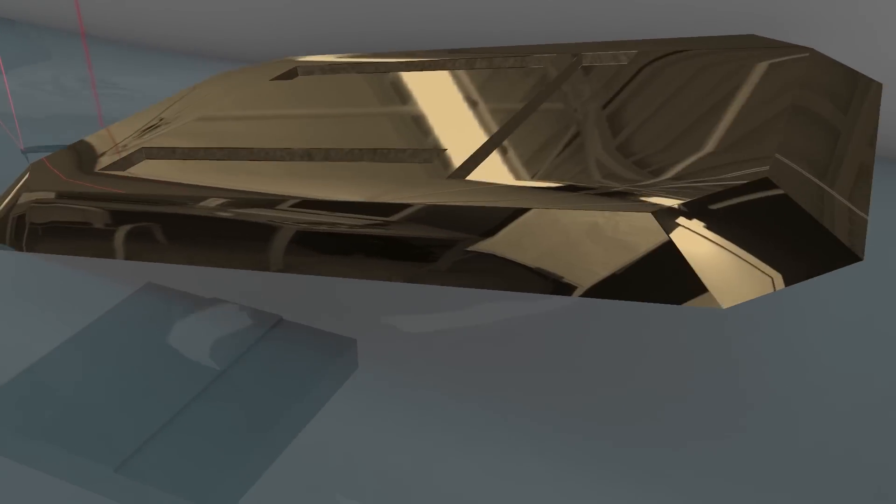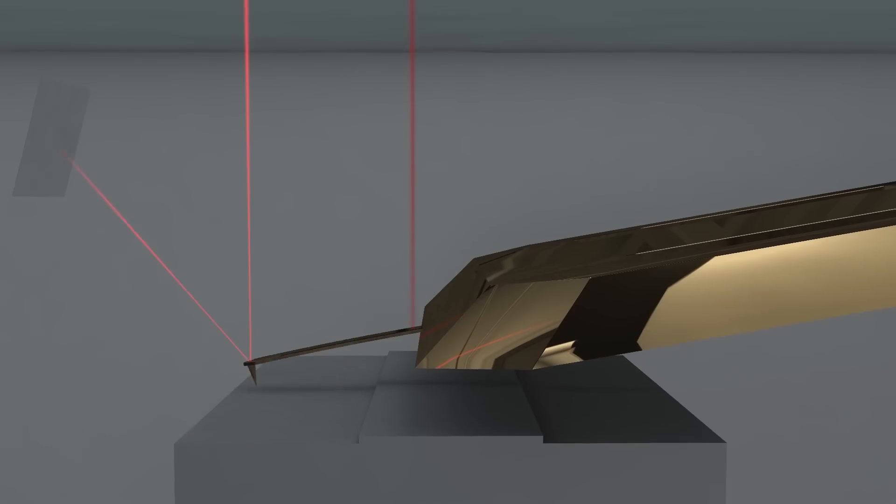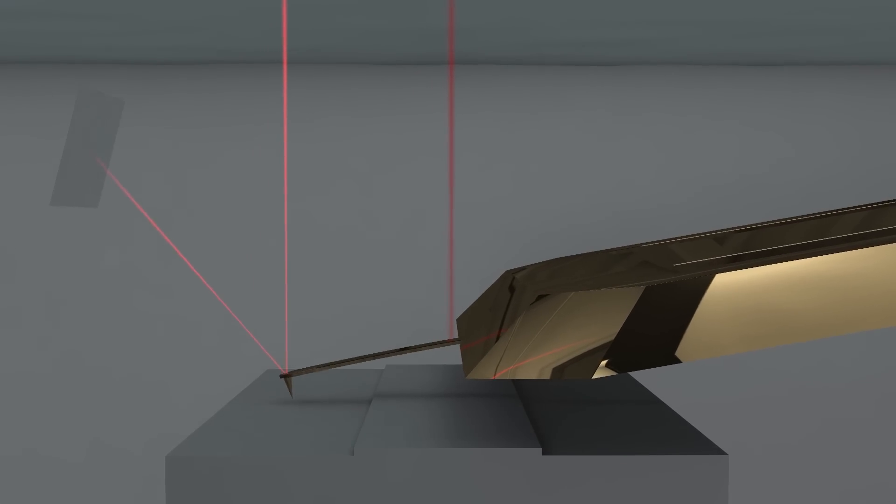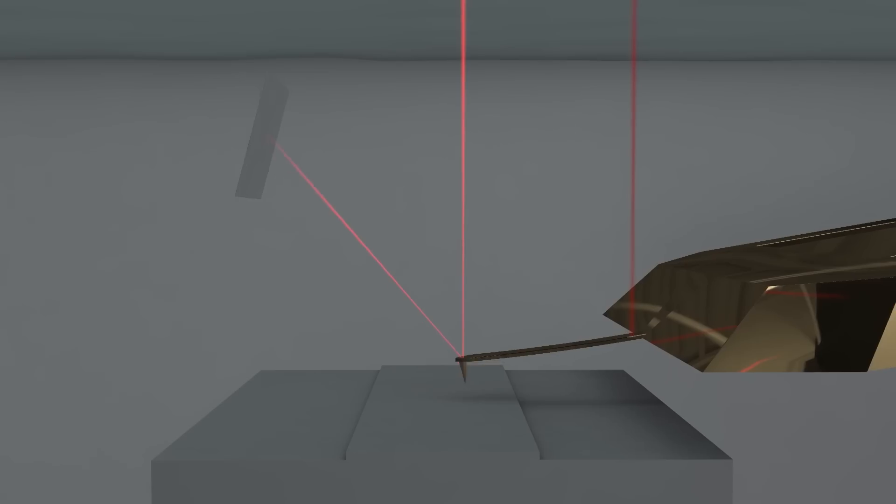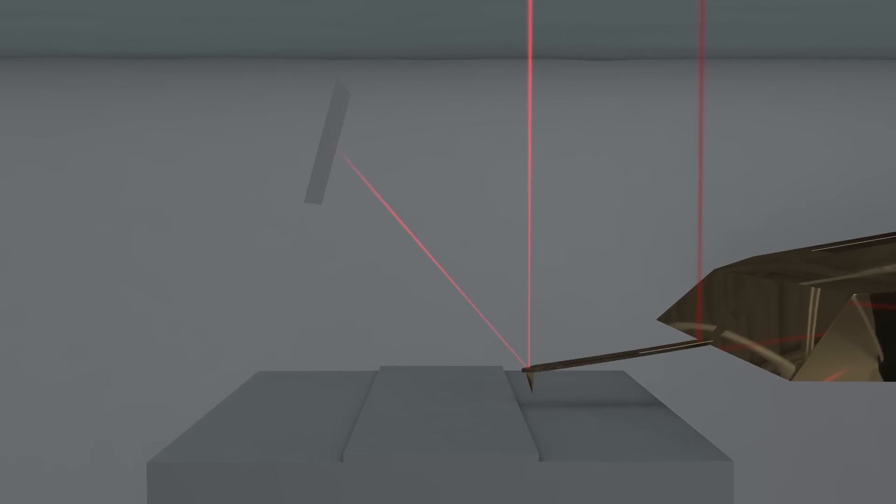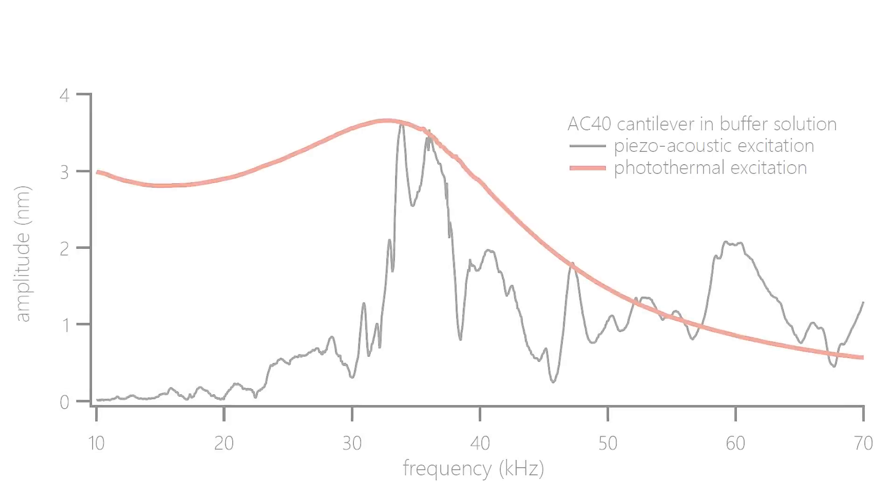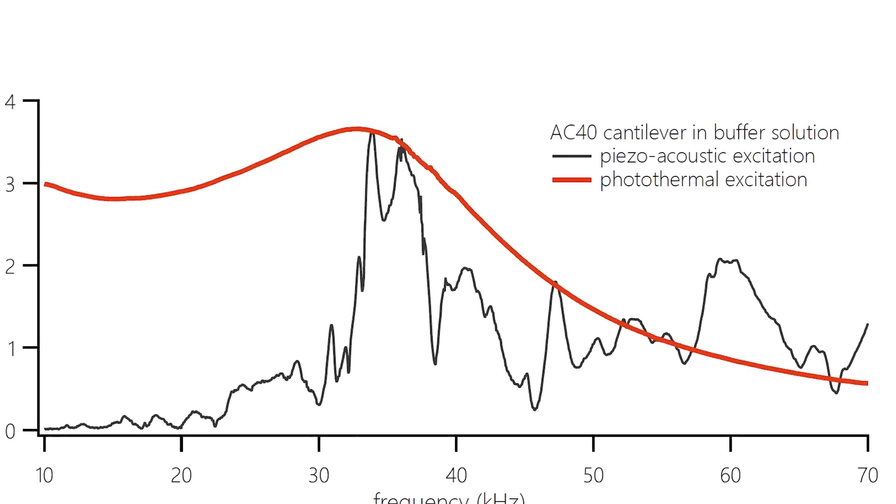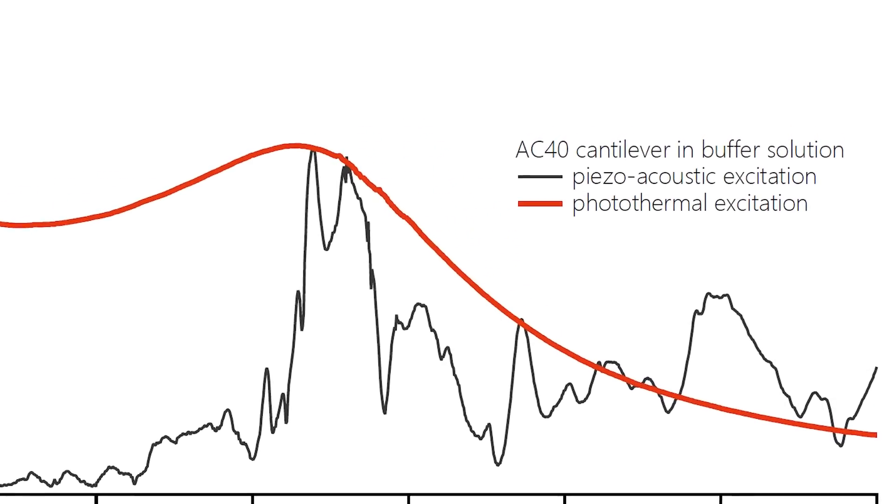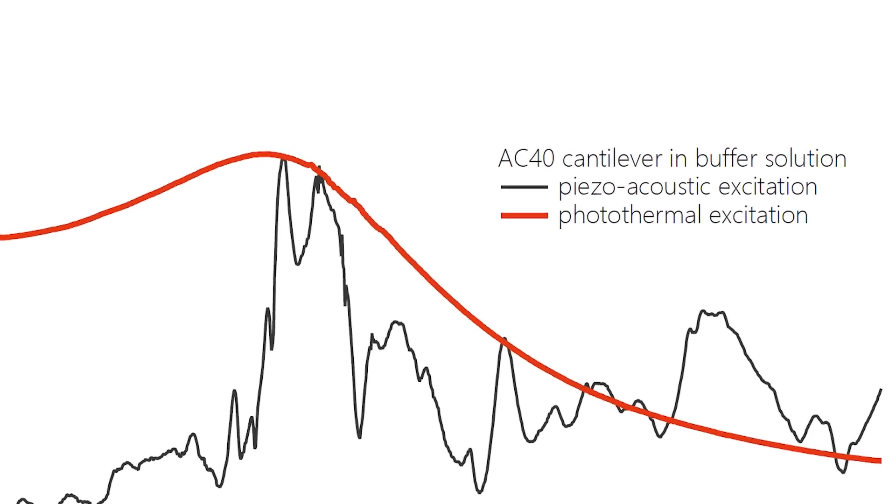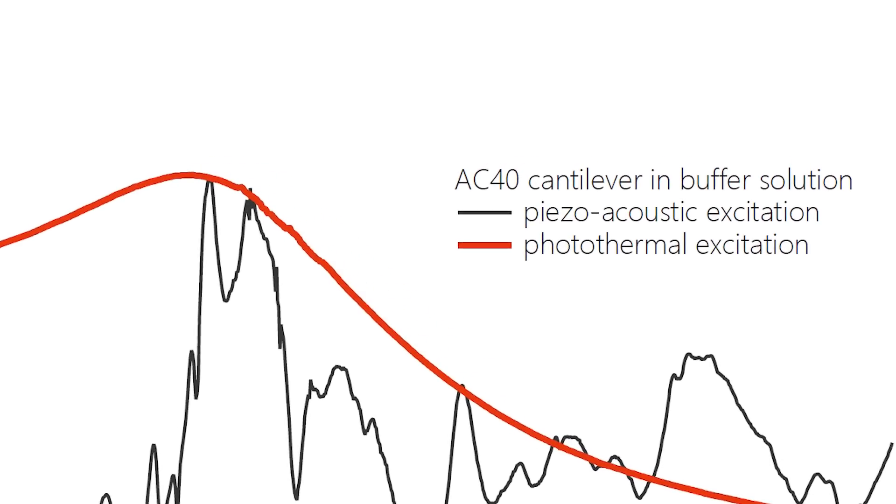Another feature that I like very much is the photo thermal excitation. We call it clean drive. The clean drive allows you to very stably drive the AFM cantilever in any condition. In air, in liquid. It allows you to drive at very high frequencies. It allows you to drive in liquid without the risk of having a wrong frequency that you excite. You get a very nice resonance peak when you do a frequency sweep. In contrast to the conventional piezo excitation, where you just get a forest of peaks and don't really know where to excite your cantilever.